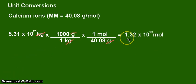And we arrive at the answer, which is 1.32 times 10 to the 19 moles of calcium ions in the Earth's oceans. So that is the amount approximately equal to this mass of calcium ions in the Earth's oceans.